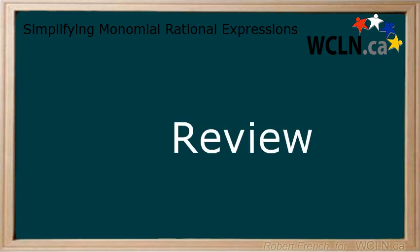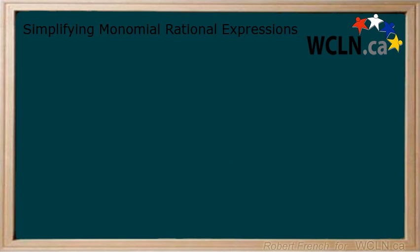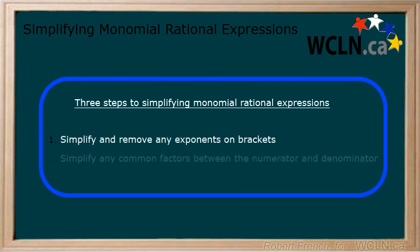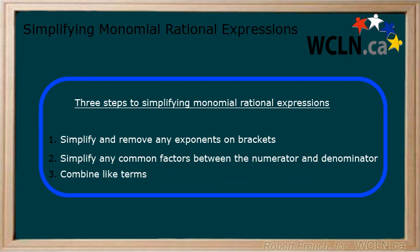In this lesson, you learned how to simplify a monomial rational expression by following three steps. Step 1: Simplify and remove any exponents on brackets. Step 2: Simplify any common factors between the numerator and denominator. Step 3: Combine like terms. By following this order, it keeps more complicated problems easier to work with.